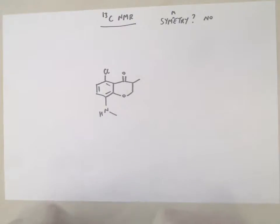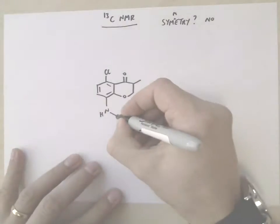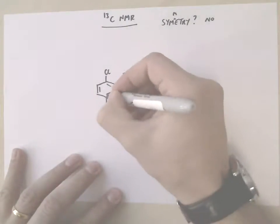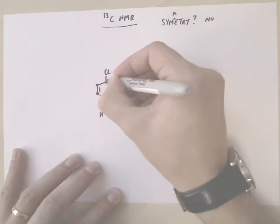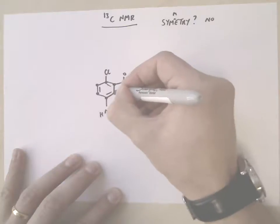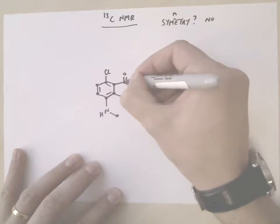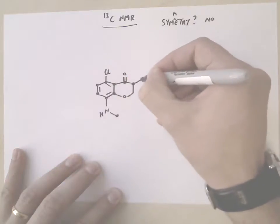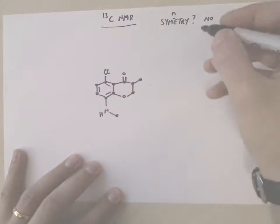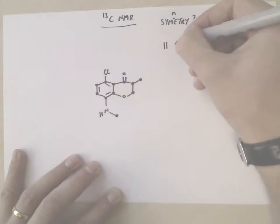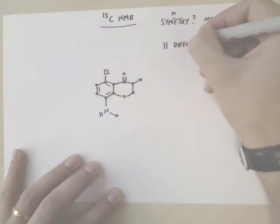So how many different carbon environments are there in this molecule? Well, we have one here, two, three, four, five, six, seven, eight, nine, ten, eleven carbons, and they're all different.